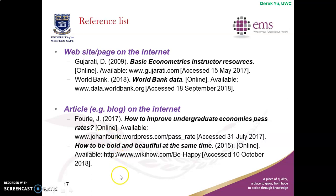For a blog article — with social media this is not surprising. First example: Free J, 2017, blog article title 'How to Improve Undergraduate Economics Pass Rate,' [online], available — the link — and then the date you accessed the blog. For Wikipedia, if you don't know the author, start with the article title: 'How to Be Bold and Beautiful at the Same Time,' 2015, [online], the link, and then the date you accessed it.